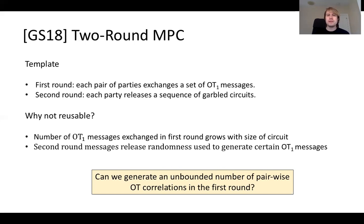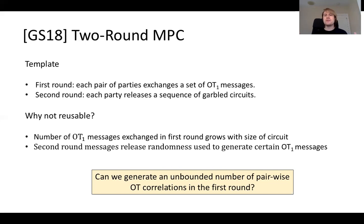These OT1 messages are being used to set up useful correlations that the parties take advantage of in the second round. Intuitively, what we need for reusability is the ability for parties to communicate in the first round and then set up a potentially unbounded number of OT correlations to be used in the second round, rather than just some fixed number that depends on the size of their communication.